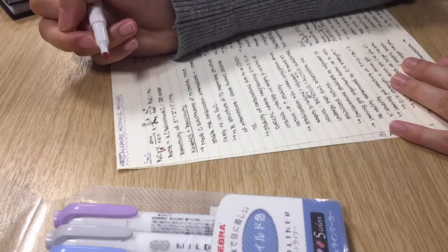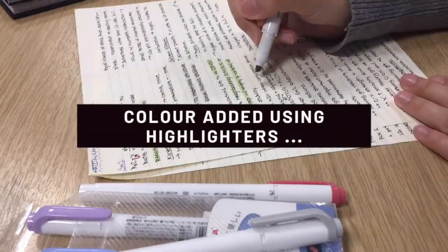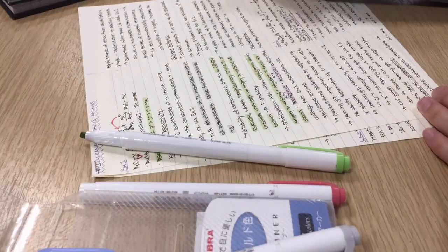A few days after making my cheat sheets, I'll usually review it by adding color using a few highlighters. My personal favorites are the mild liners.